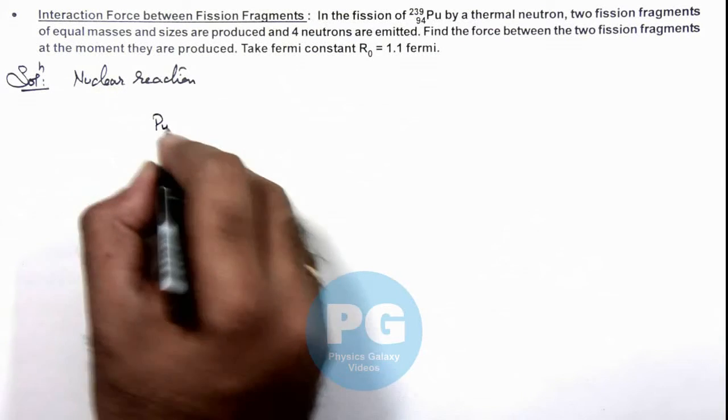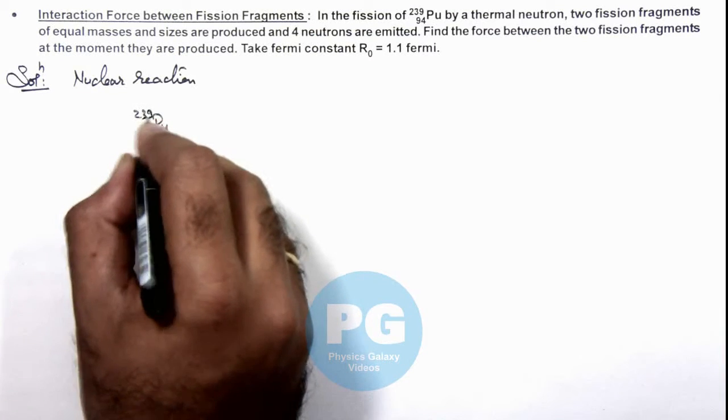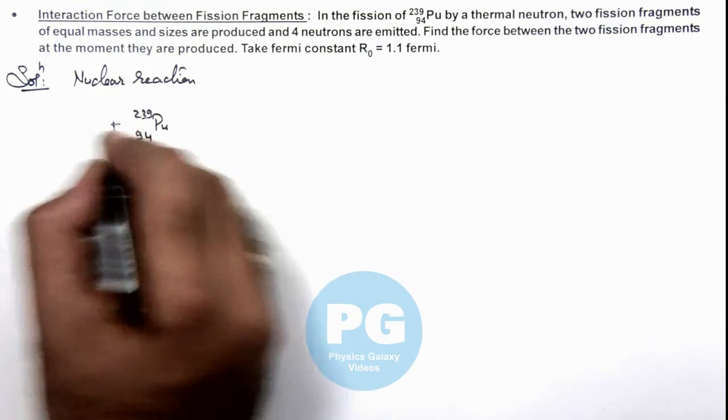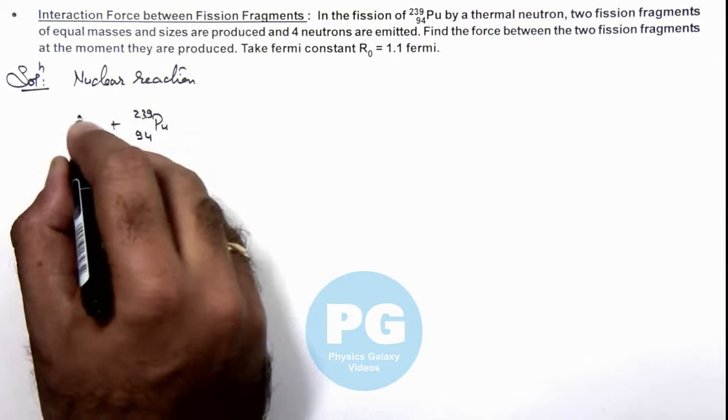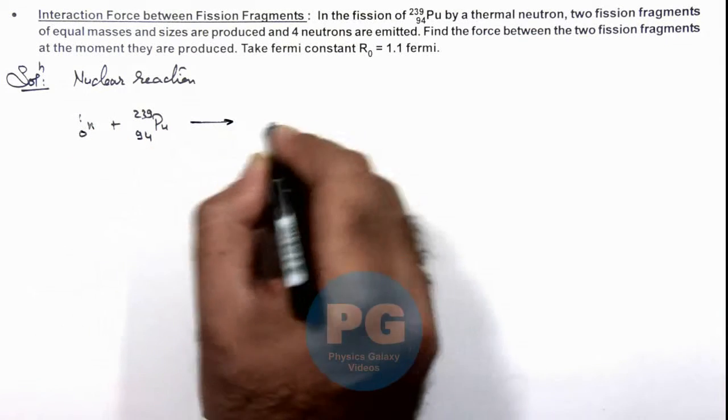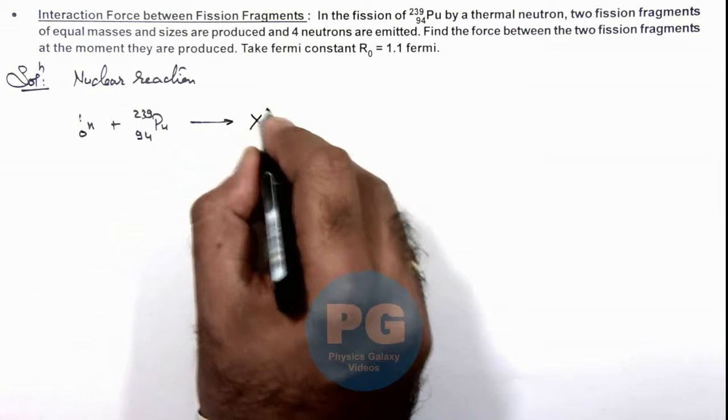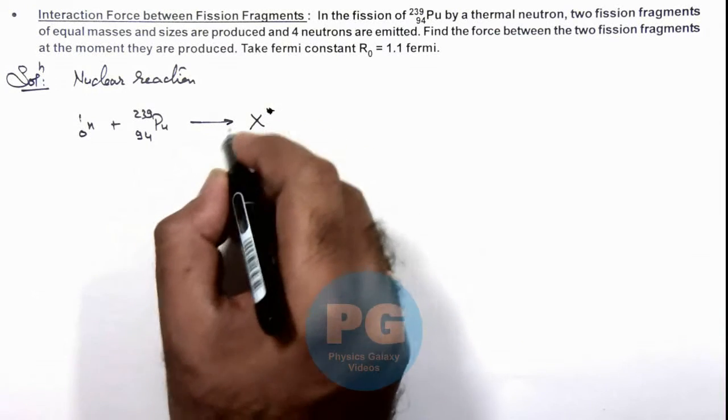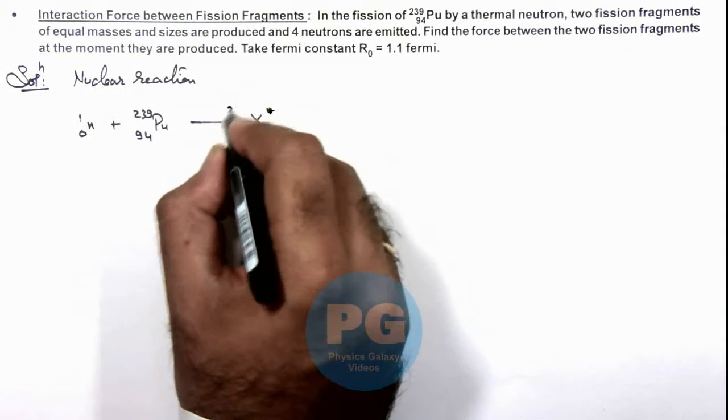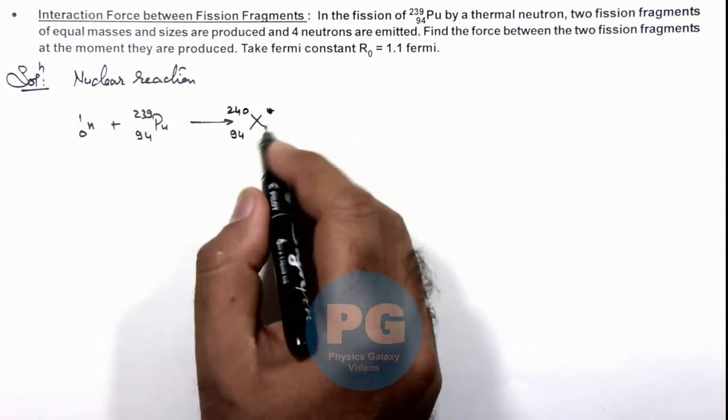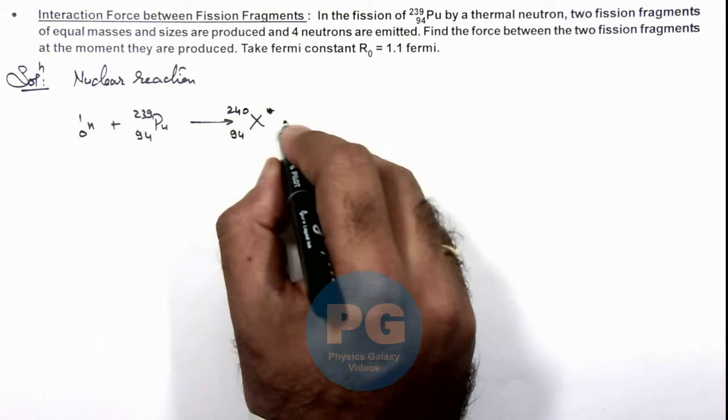Plutonium-239, when a thermal neutron is fired onto it (0,1), it creates an element X which is in an excited state with nuclear charge 94 and mass 240. And this excited nucleus will further decay.